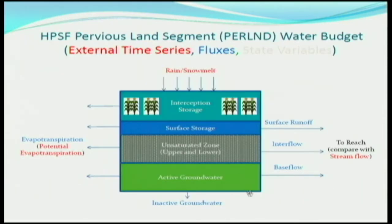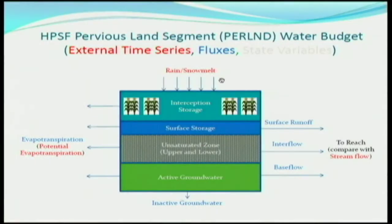Within each land segment there are different pieces. There's a canopy layer — rain caught on the way to the ground — and then once it reaches the ground, some runs off overland and some infiltrates into the soil and goes into the groundwater table. Each of these is governed by hydrology process parameters that we don't necessarily know exactly. There are also external time series we must supply: for every point in time, I need to know the rain and the potential evapotranspiration.